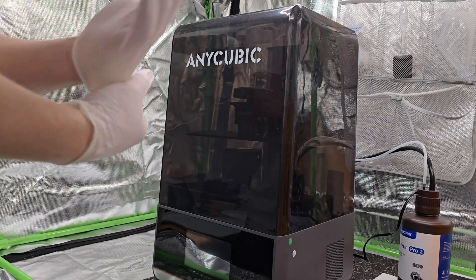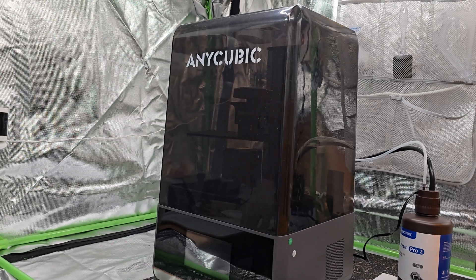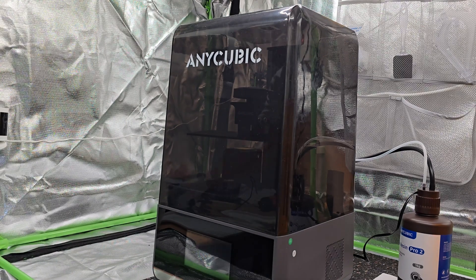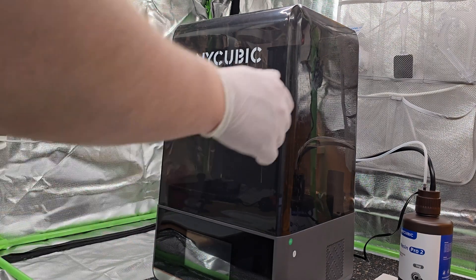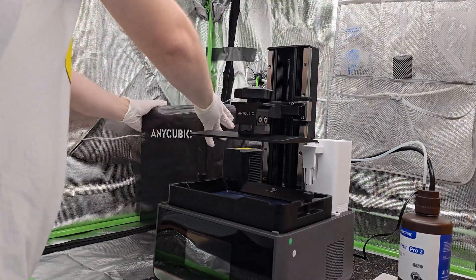I will do it on Anycubic M7 Pro, but this applies to pretty much every resin printer out there. I do this kind of cleaning roughly every 10 prints, but it really depends on your environment. Mine is pretty clean with minimal dust floating around, so I do it less frequently.